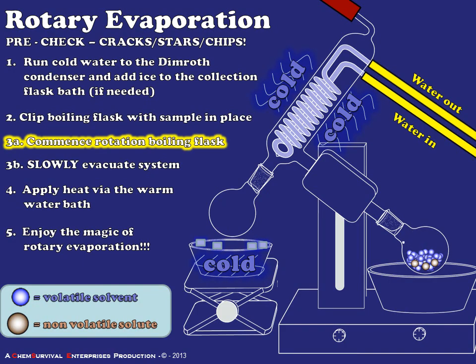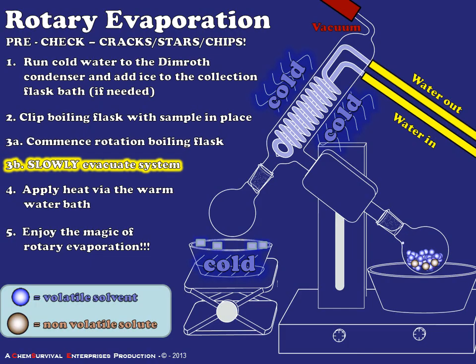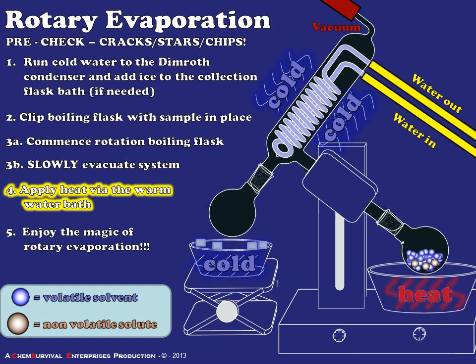Rotation serves two purposes. First, it spreads some of the solvent out along the interior walls of the flask, promoting evaporation. Second, it agitates the sample slightly, which reduces the risk of bumping or flash boiling, which can cause solvent contamination or otherwise adversely affect your rotary evaporation. In the next step, we'll slowly evacuate the system by opening the vacuum line. As we do that, the sample is now being agitated and is under reduced pressure, which means that the boiling points of all the volatile materials have been reduced.